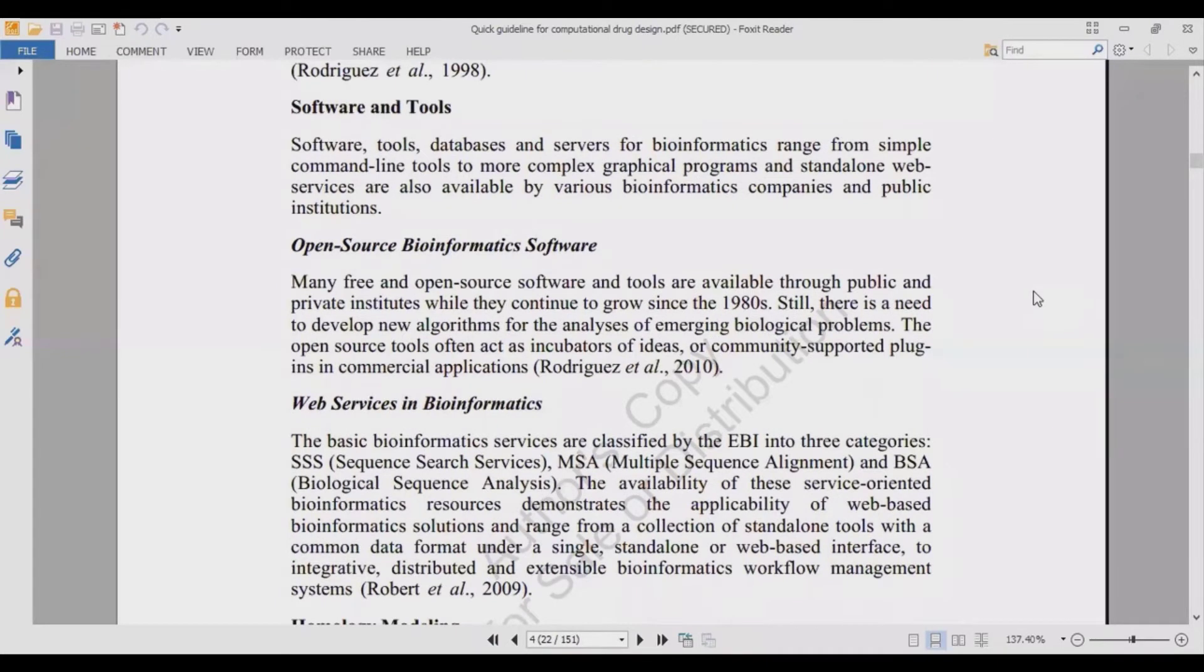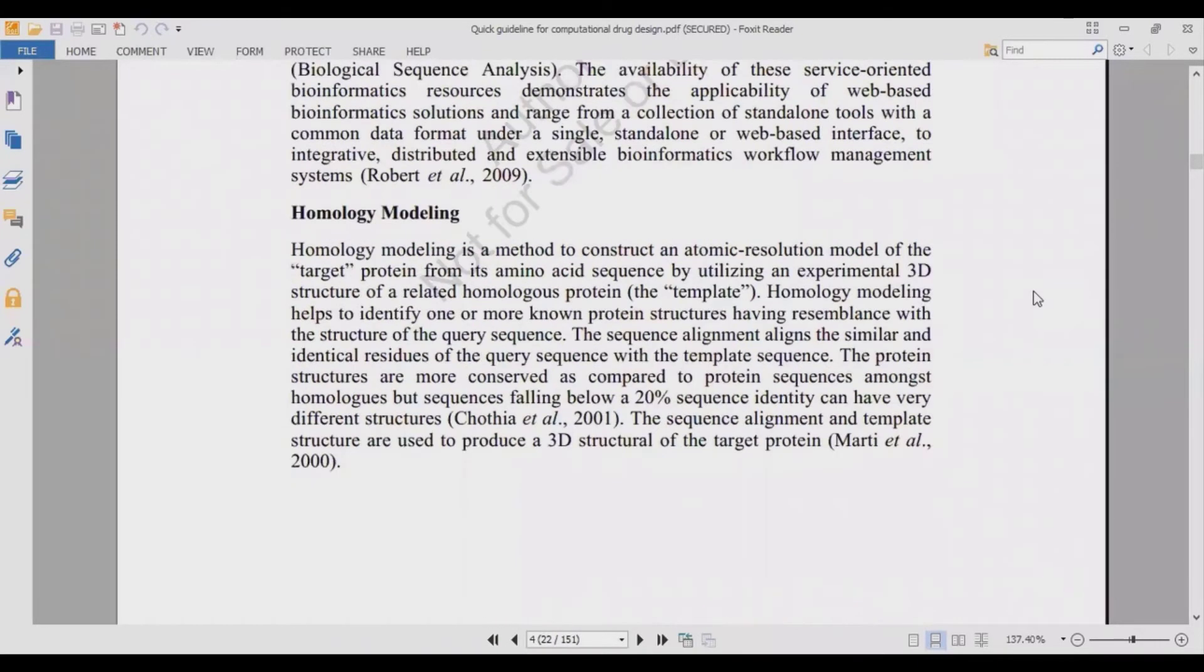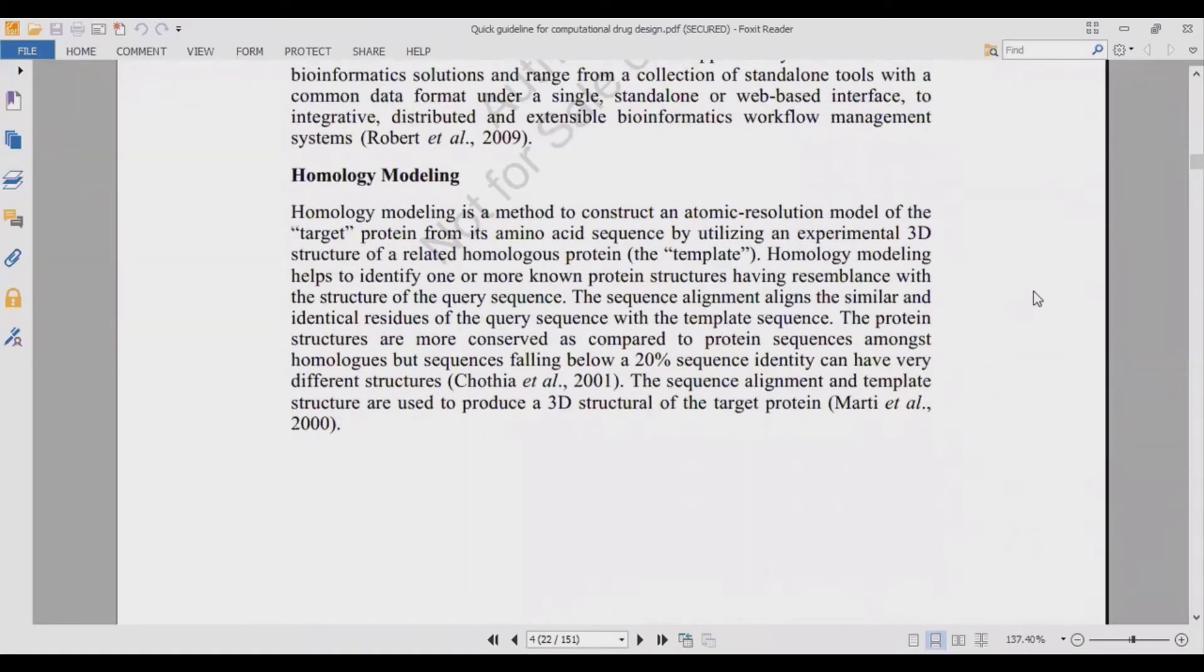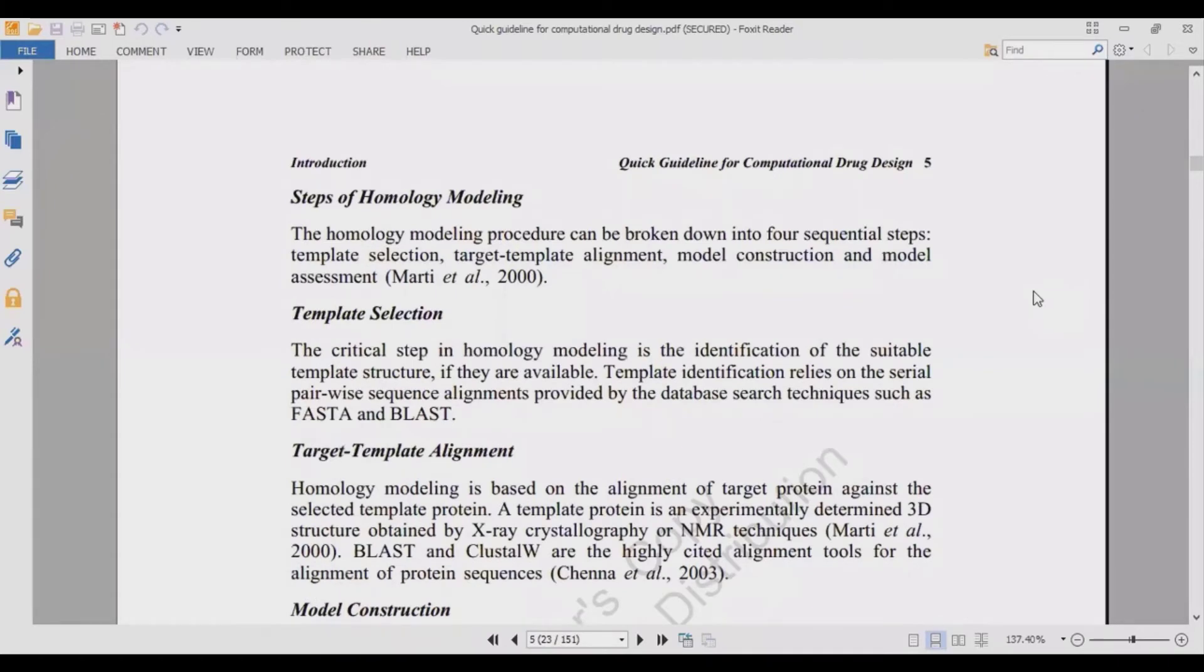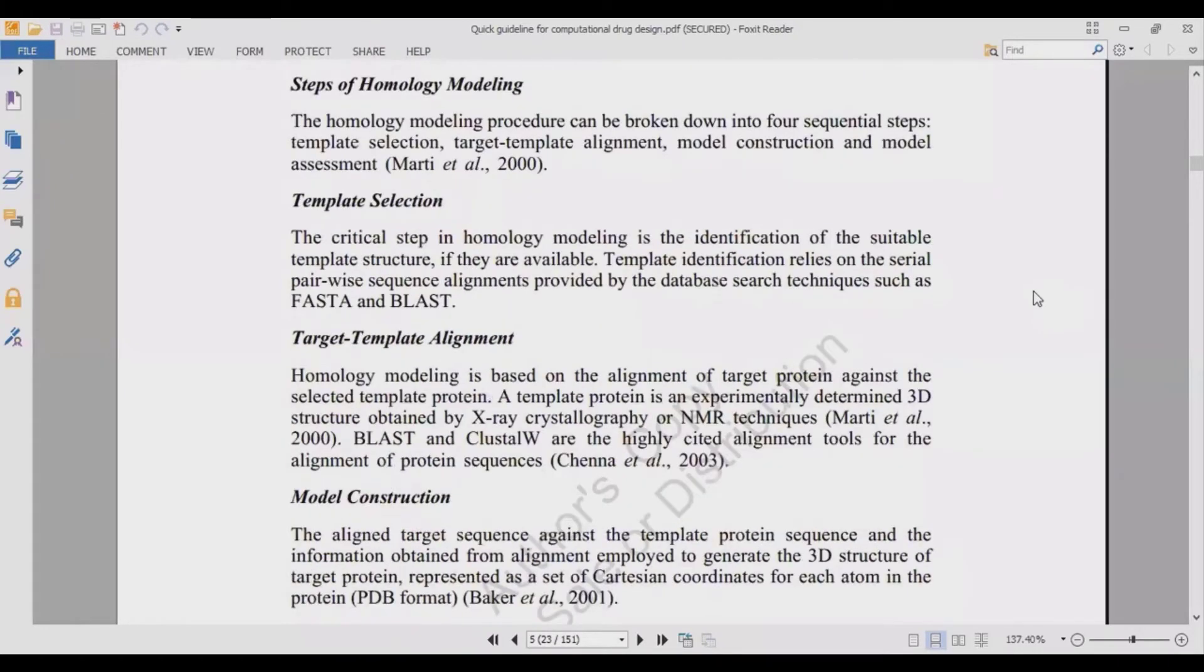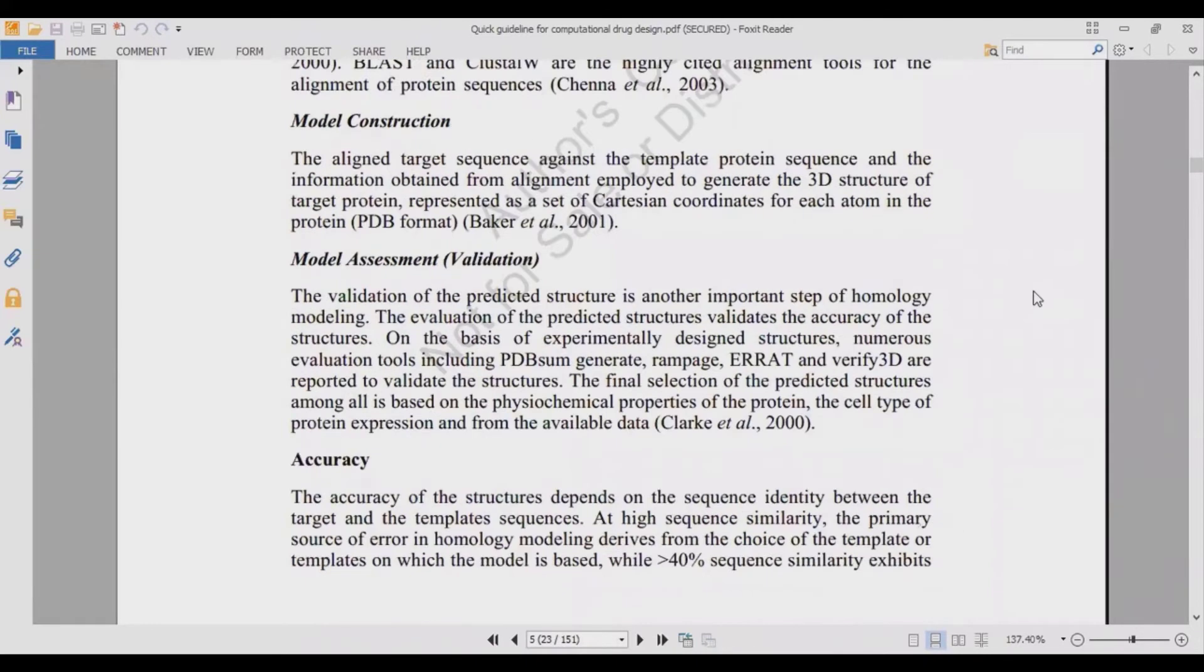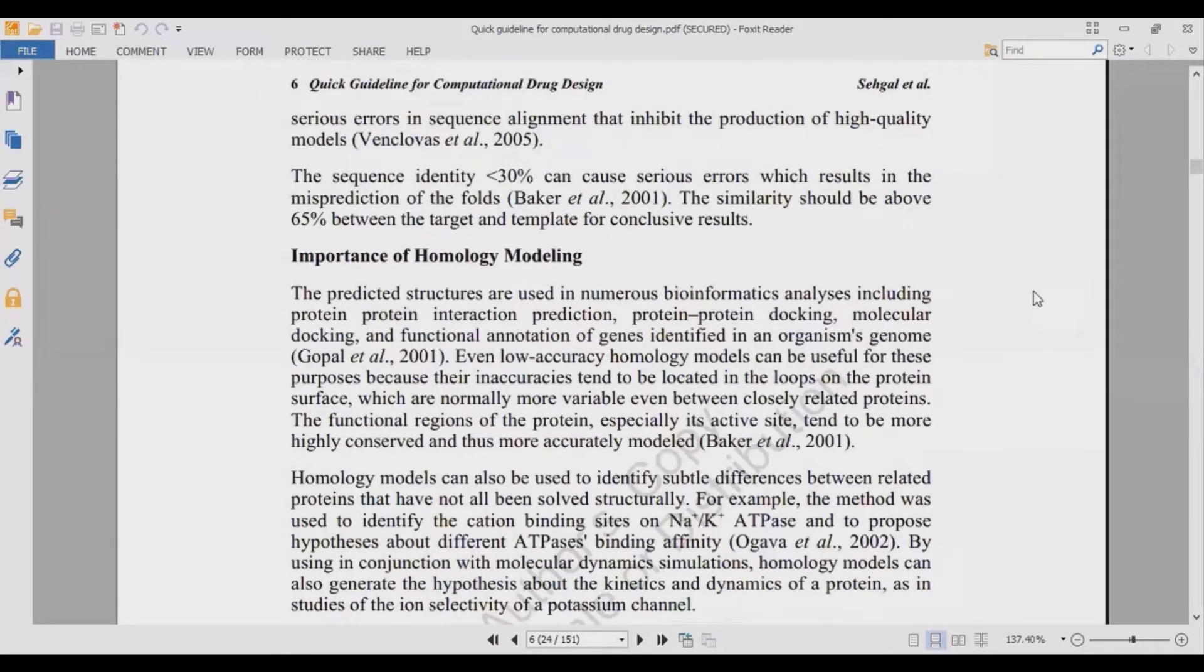Homology modeling, also known as comparative modeling, involves having a template and a target. You align the target with the template sequences, then generate three-dimensional structures, validate data structures, and minimize the structures. This covers the importance of homology modeling.